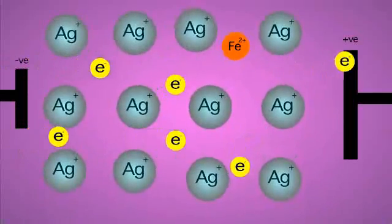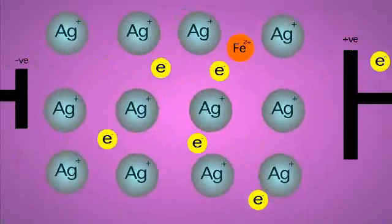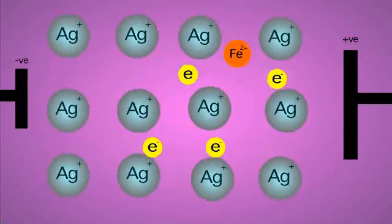Imperfections in the lattice also increase the number of collisions. Resistance means some of the kinetic energy of the electrons is converted to heat. This limits the efficiency of electrical systems. Ideally, we'd like to remove or minimise this energy loss.